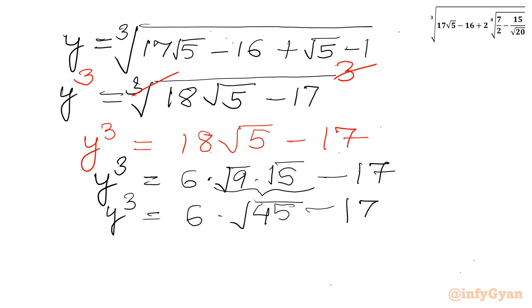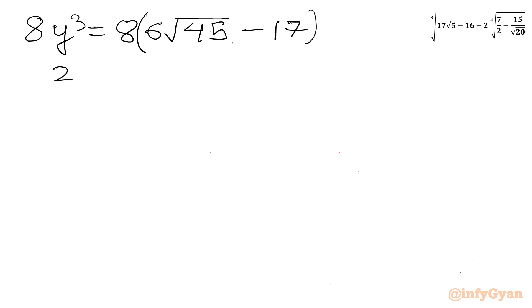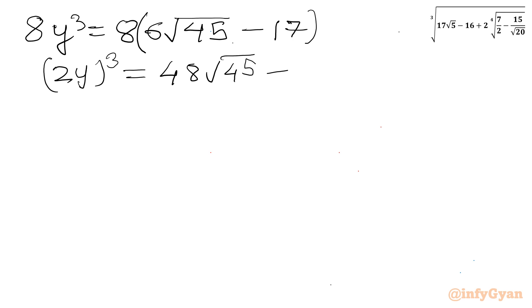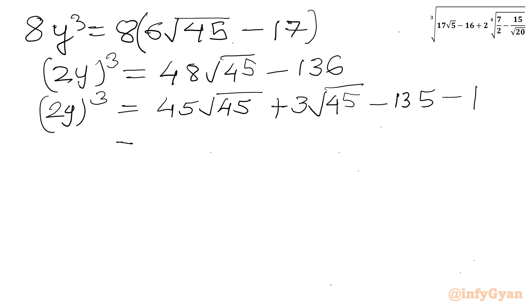Now I will multiply both sides of the equation by 8. So the left side becomes (2y)³, and the right side becomes 48√45 minus 136. I can split 48 as 45 plus 3, giving 45√45 plus 3√45. And I can split 136 as 135 plus 1. Rearranging, we get 45√45 minus 1, then minus 135, then plus 3√45.